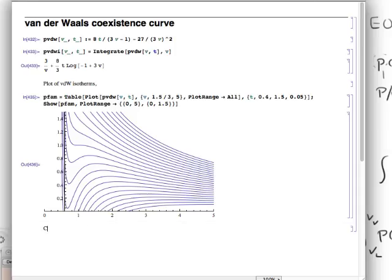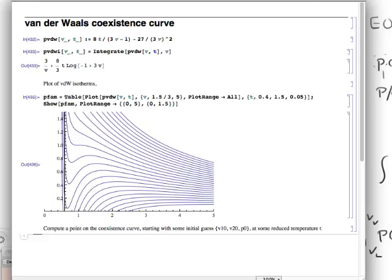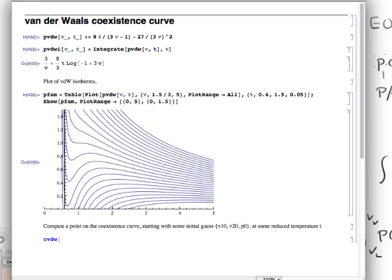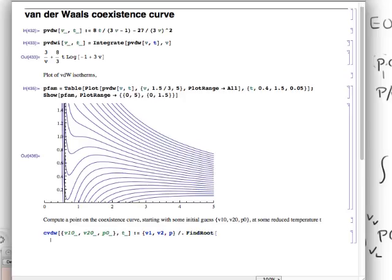So, now, we want to make a function that computes a point on the coexistence curve, starting with some initial guess, which is in the form V1, meaning the liquid, V2, P0, and at some reduced temperature, T. So, that'll be a function called compute van der Waals. It takes as its argument a list of the initial guesses and also T as a parameter.